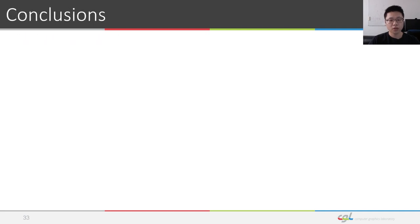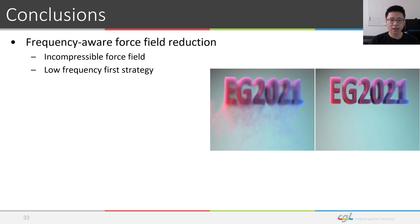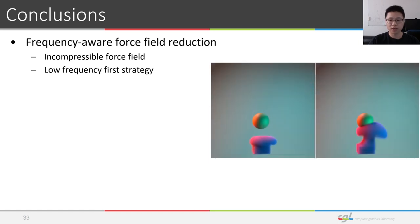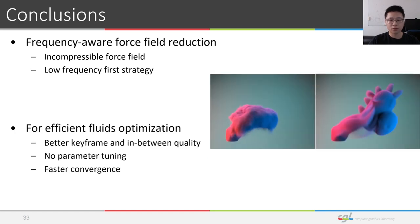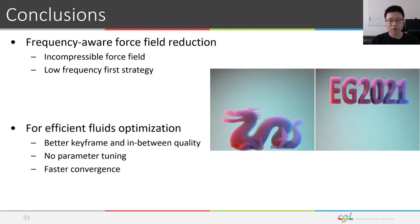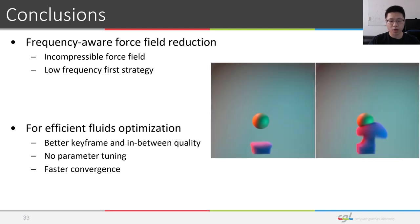In conclusion, we have presented a simple yet powerful technique to address the high dimensionality and lack of constraints of the parameter space through parameterizing the force field as vector potentials to enforce incompressibility, as well as adapting a low-frequency-first optimization strategy. Our method advances previous work on fluid control by providing better convergence and density preservation, smoother transitions between simulations and keyframes. Our parameterization also removes the need of hyperparameter tuning and achieves a faster convergence performance.